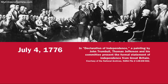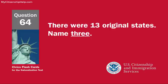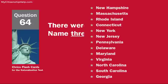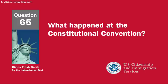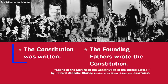There were 13 original states. Name three. New Hampshire, Massachusetts, Rhode Island. What happened at the Constitutional Convention? The Constitution was written.